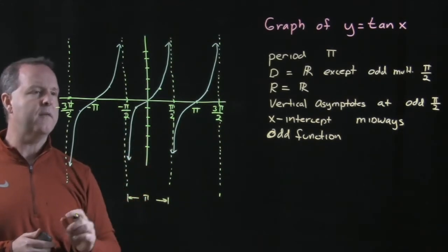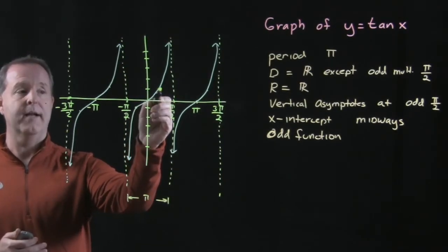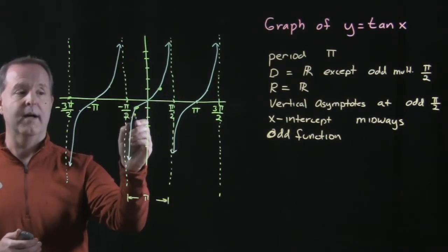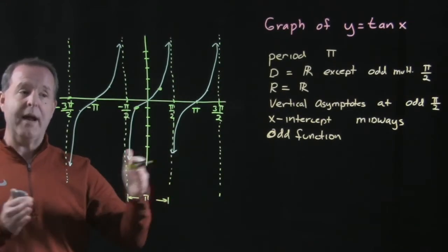And then maybe one more thing that we can describe is that the graph or the value of the graph has a value at 1 or negative 1 at one-fourth and three-fourths of the way through a period.